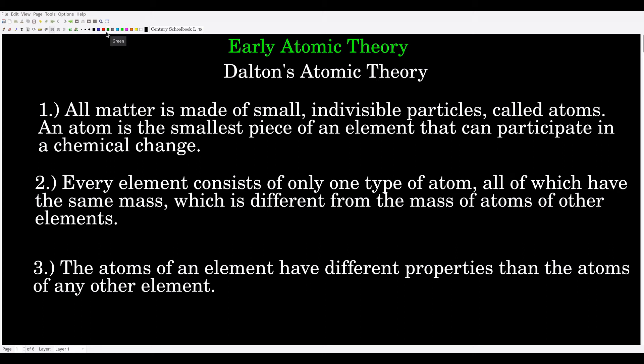This video is on early atomic theory, and we're going to start with Dalton's atomic theory. John Dalton was a school teacher back a couple hundred years ago, and one of his hobbies was reading scientific journals from all over the world. By piecing together what was known globally, he realized there was a coherent theory of the atom — something that hadn't happened up to that point. He condensed all of this into his atomic theory.